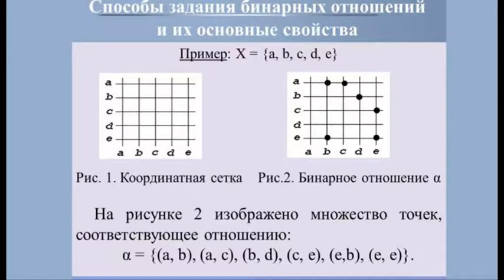Следующая подтема — способы задания бинарных отношений и их основные свойства. Первый метод восходит к аналитической геометрии: чертим пару взаимно перпендикулярных осей Ox (горизонтальная) и Oy (вертикальная), на каждой отмечаем точки, представляющие элементы множества X. Координатная сетка с метками A, B, C, D, E задаёт координаты точек на обеих осях. На плоскости отмечаются точки с координатами (x, y), соответствующие отношению α: (A,B), (A,C), (B,D), (C,E), (E,B), (E,E).